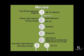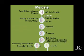Those cells, as a result of that first cell division, are now called secondary spermatocytes or secondary oocytes.